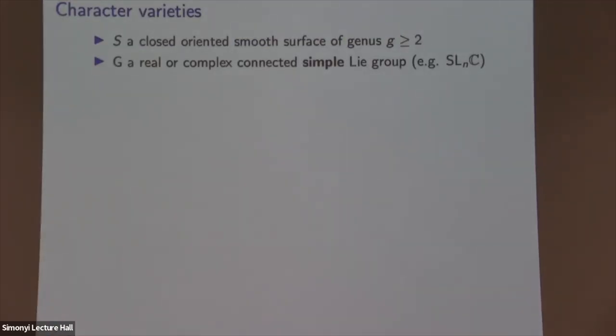Let me start talking about what the objects are. S, for me, is going to be a closed oriented surface of genus greater than or equal to two. It's just a topological object. And G is a real or complex connected simple Lie group, like SL(N,ℂ) or SL(N,ℝ). I can say it's a complex, real, or reductive Lie group, but then I'd have to add a lot more adjectives to all the statements.